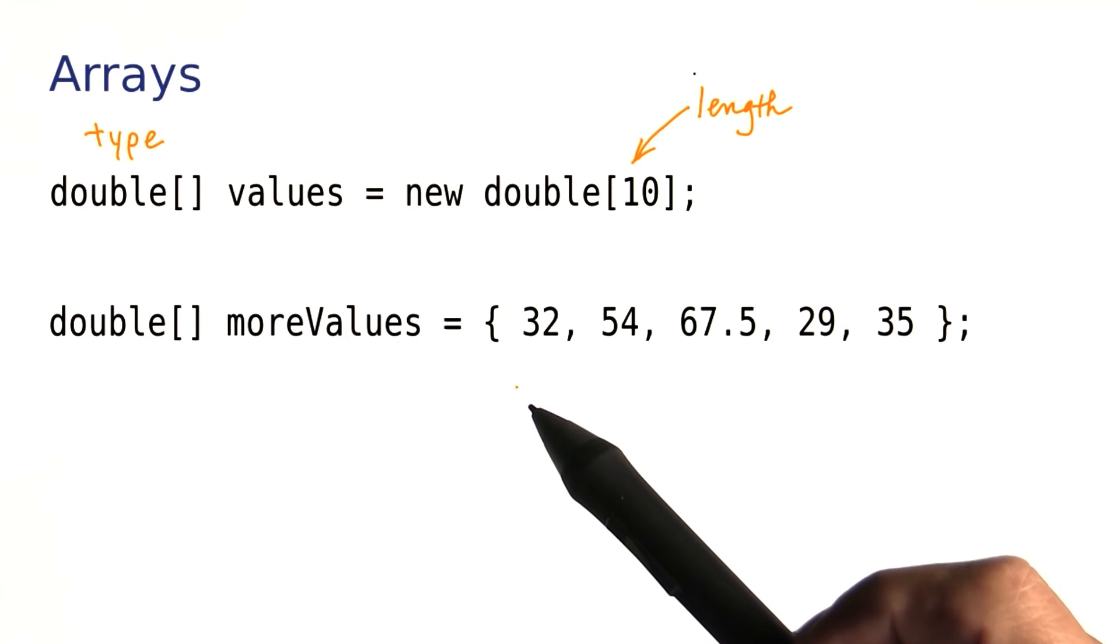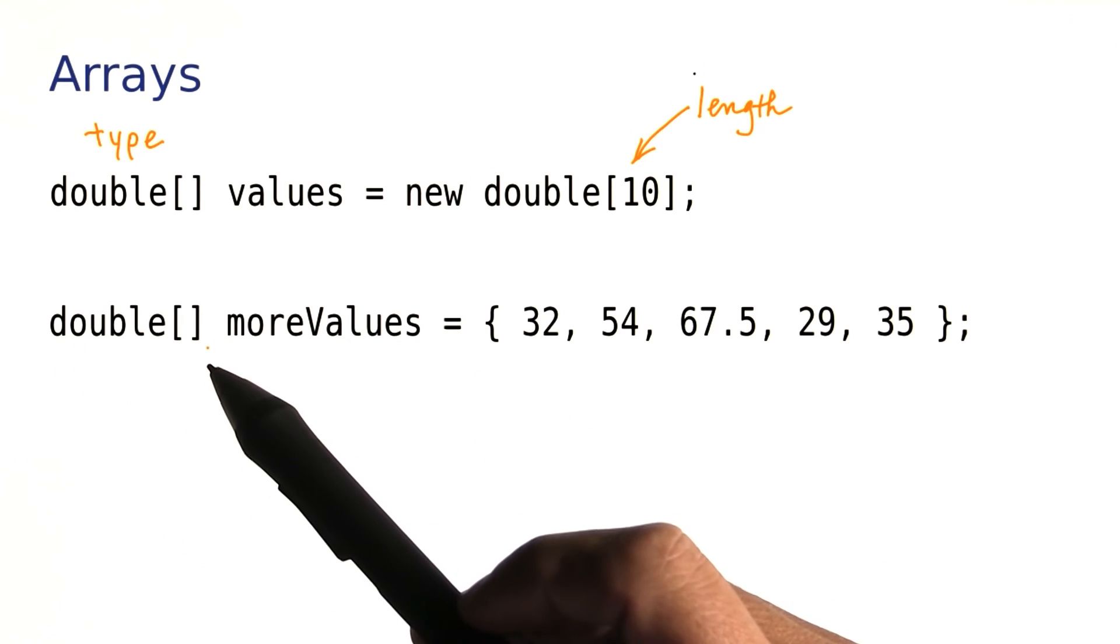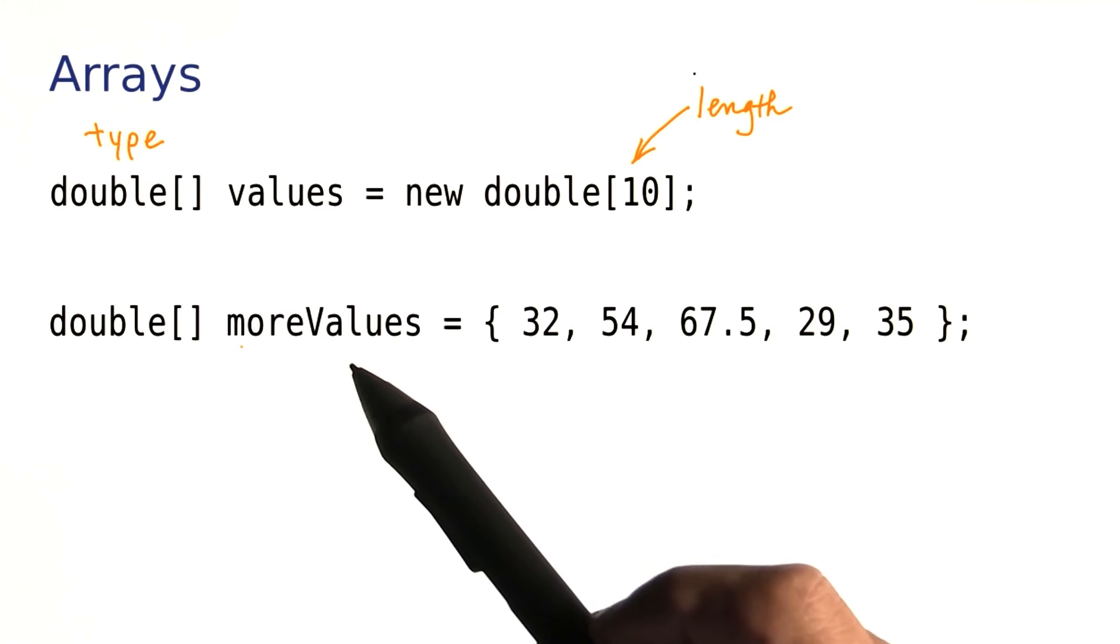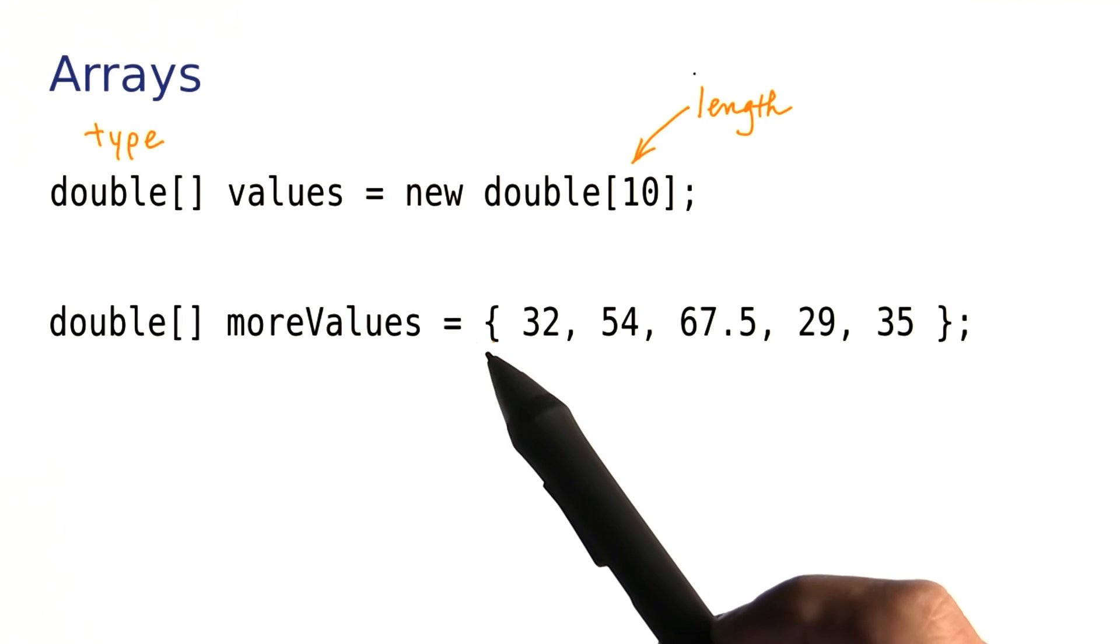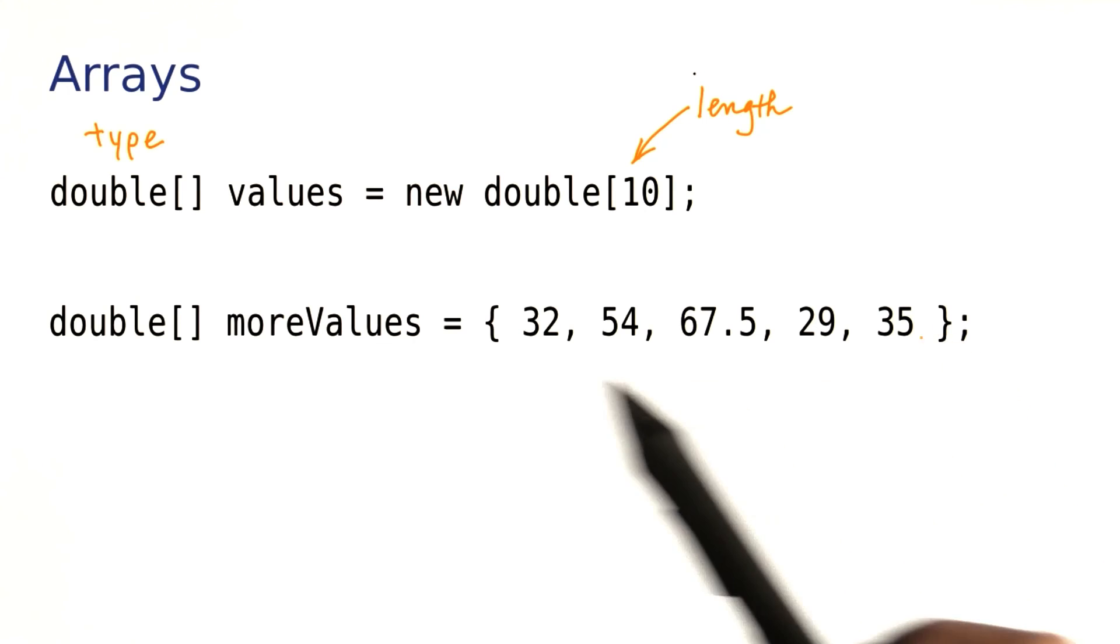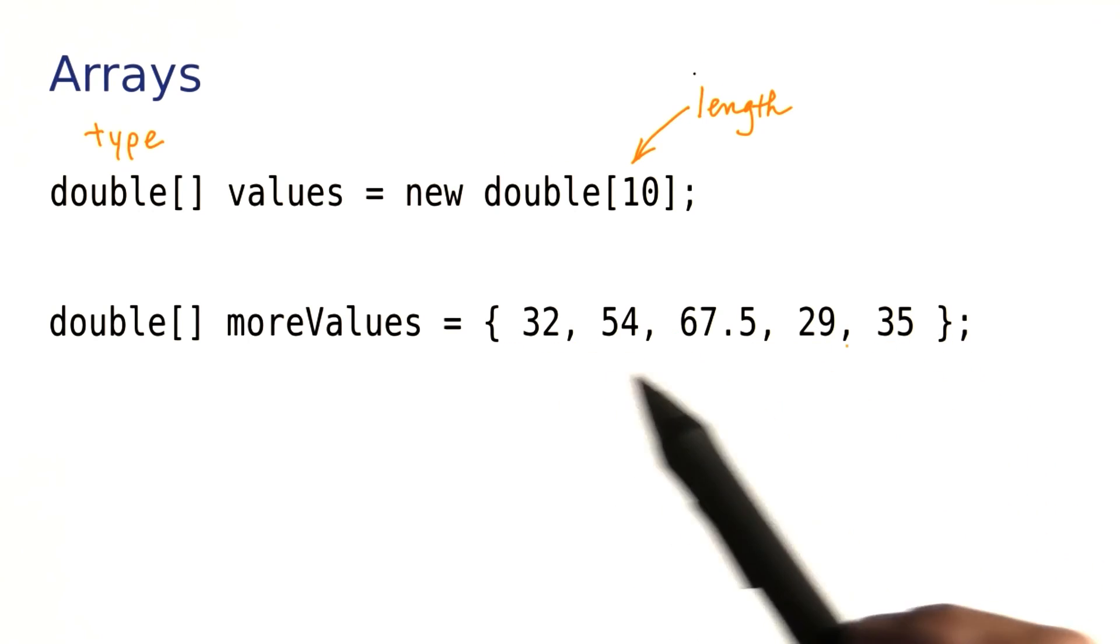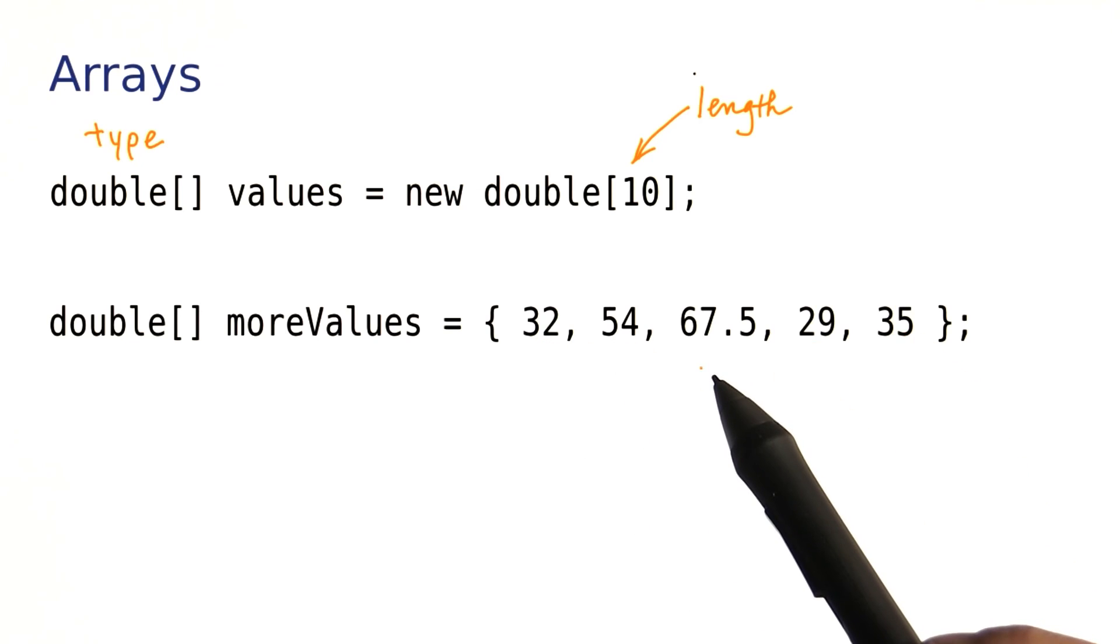There's a second way of constructing an array that's often very convenient. Here I have an array of floating point numbers. I call it moreValues. And over here, I simply put, enclosed inside braces, the values that I want to put in the array. This array has length 5, and it will always have length 5.